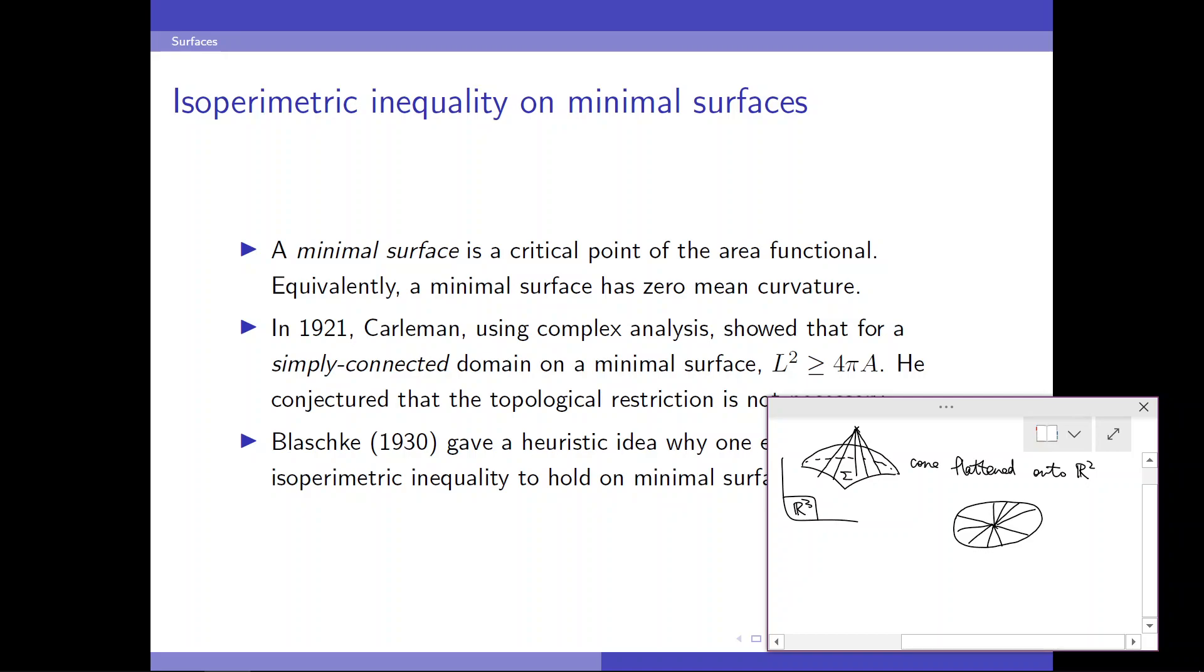Then, we can use the isoperimetric inequality on this flattened cone. So we get L squared is greater than or equal to 4 pi the area of cone. And since sigma is area-minimizing and the cone has the same boundary as sigma, we get area of cone is greater than the area of sigma. And the boundary curves have the same length. So we get L squared is greater than or equal to 4 pi times A of sigma. But to my knowledge, this heuristic argument is never made rigorous.